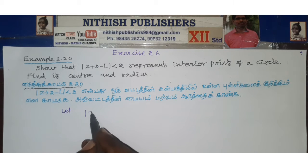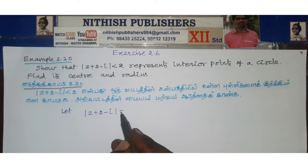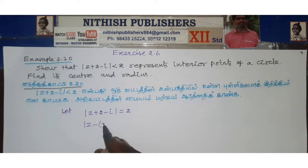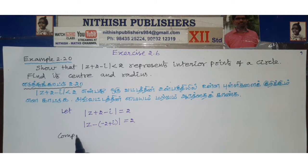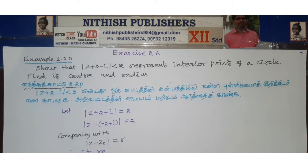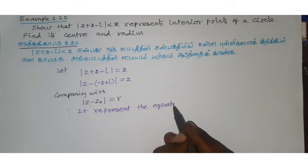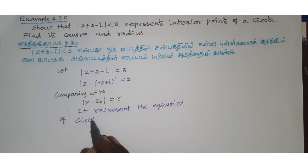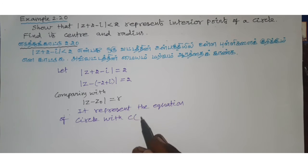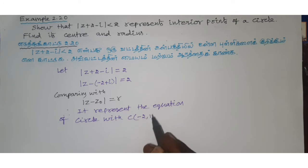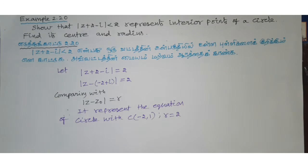First, let the equation modulus z plus 2 minus i equal to 2. Comparing with modulus z minus z naught equal to r, we get it represents the equation of a circle with center at minus 2 comma 1 and radius equal to 2.